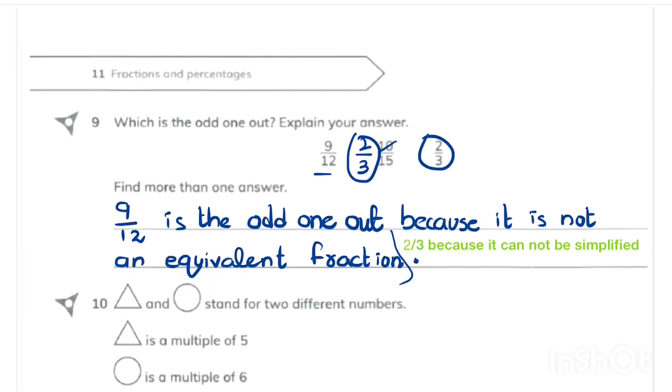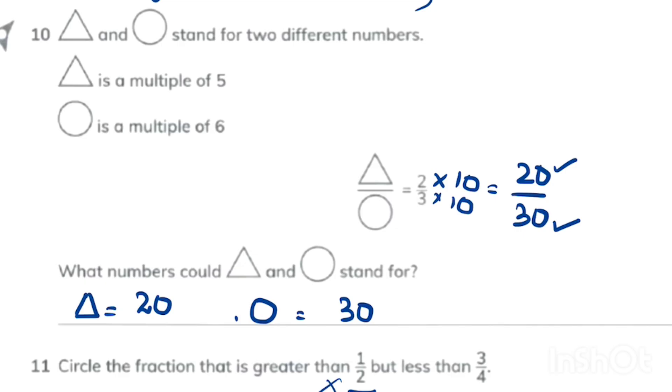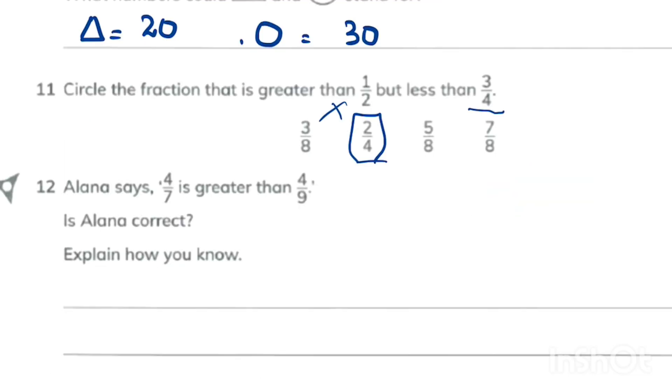Solution for question 9 is here. In question 10 I multiplied the 2 upon 3 by 10 so I get 20 which is the multiple of 5 and then I get 30 which is the multiple of 6. In question number 11 again you have to change the denominators to get the idea of which one is bigger which one is smaller.